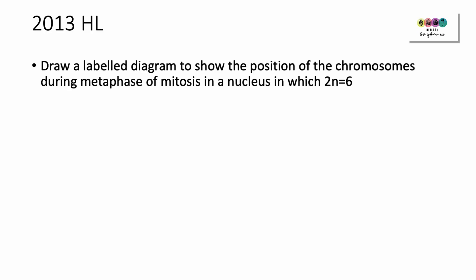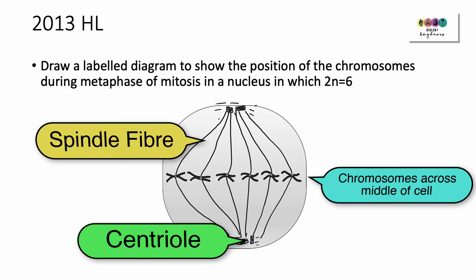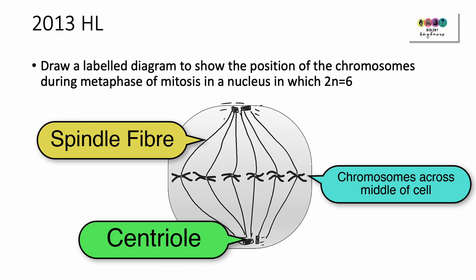2013: Draw a labelled diagram to show the position of the chromosomes during metaphase of mitosis in a nucleus in which the diploid number equals six — 2n equals six. Remember, metaphase: meet in the middle. This is where the chromosomes are lined up across the middle of the cell. Make sure you draw six of them, show that they're across the centre of the cell, and that they are not yet separated — those sister chromatids are not separated.